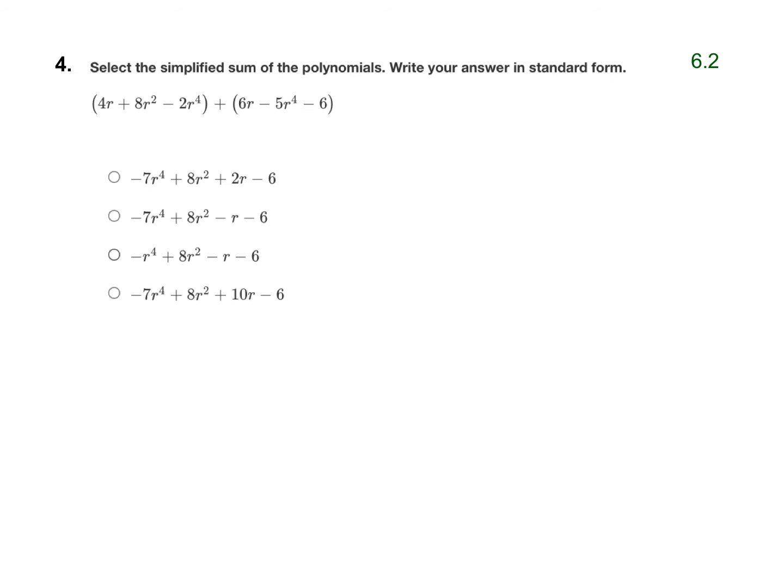So for this first polynomial, the largest exponent should come first, which is negative 2r to the fourth. Then the next biggest exponent would be 8r squared, and then I have my positive 4r.